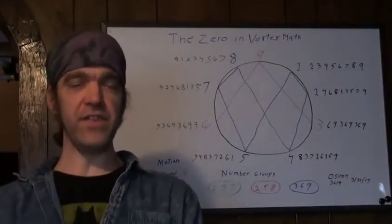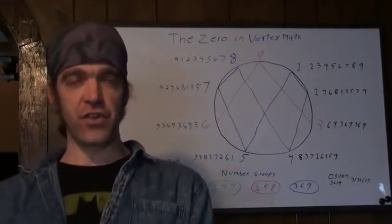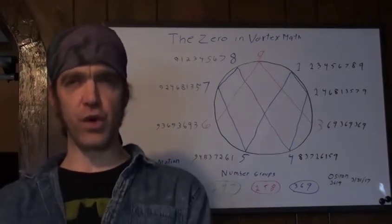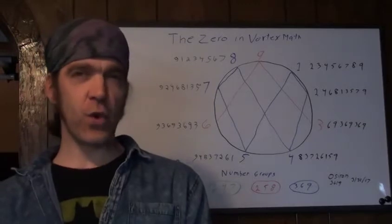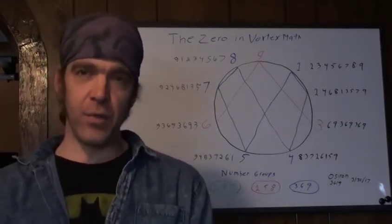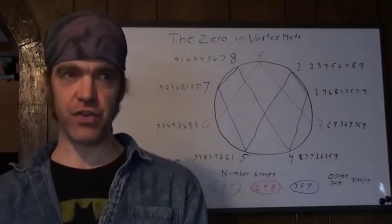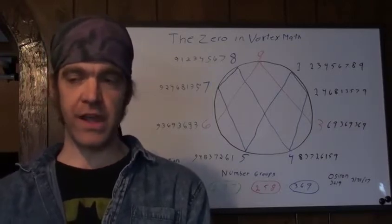Hello everyone, this is the great Lord and Master, Asuron the Eternal, or the artist formerly known as the Great Roberto. Okay, this should be quick, but this is going to show where the zero is in the construction of the Vortex Math sigil.